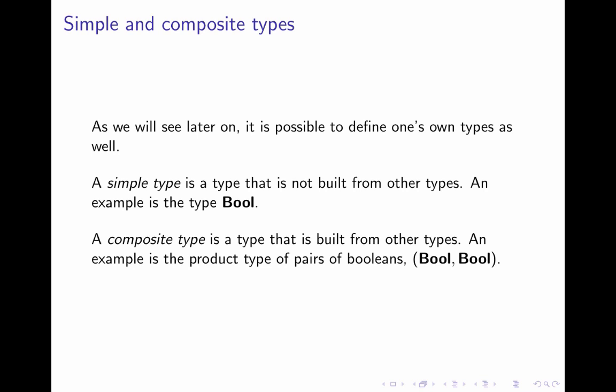As we've seen now there are simple types. Simple types are types that are not built from other types. An example is the type boolean. We can also have composite types. A composite type is a type that's built from other types. If you have a pair of booleans.